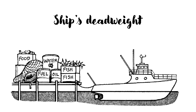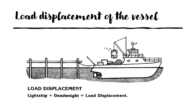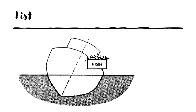That maximum permissible draft refers to the load line in which your vessel is floating. So if you are in summer waters, your summer load line becomes your maximum permissible draft. If you are in winter, then winter load line becomes your maximum draft. The amount of weight you can load in the vessel to bring it to its maximum permissible draft is known as dead weight. Then we have load displacement, which is light ship plus dead weight together — the weight of the empty ship plus the weight you can load to the maximum draft.